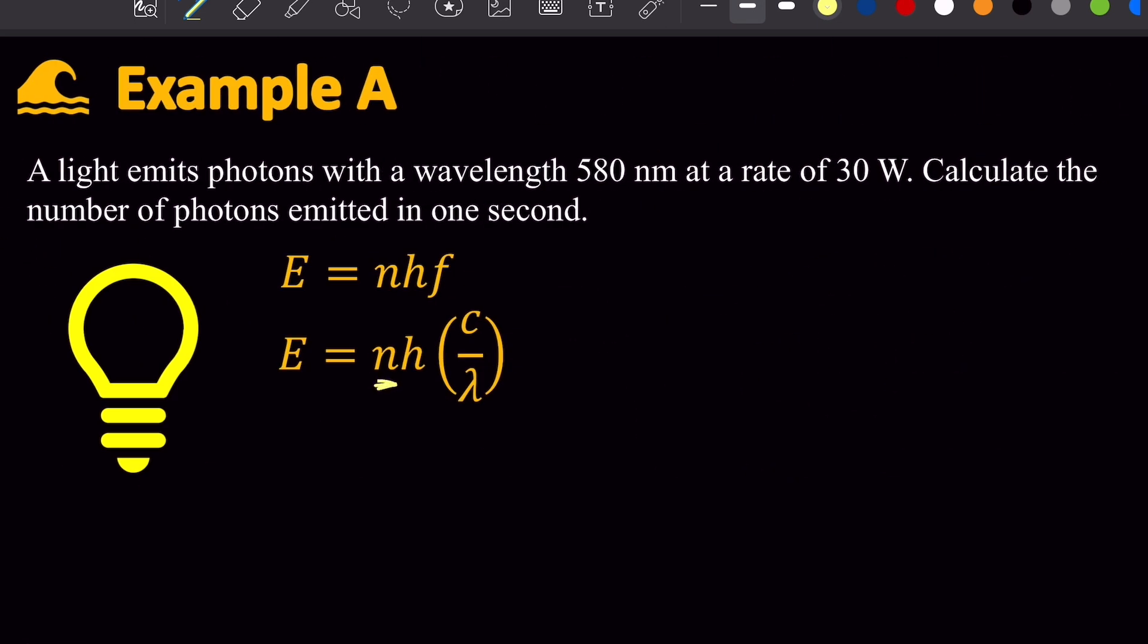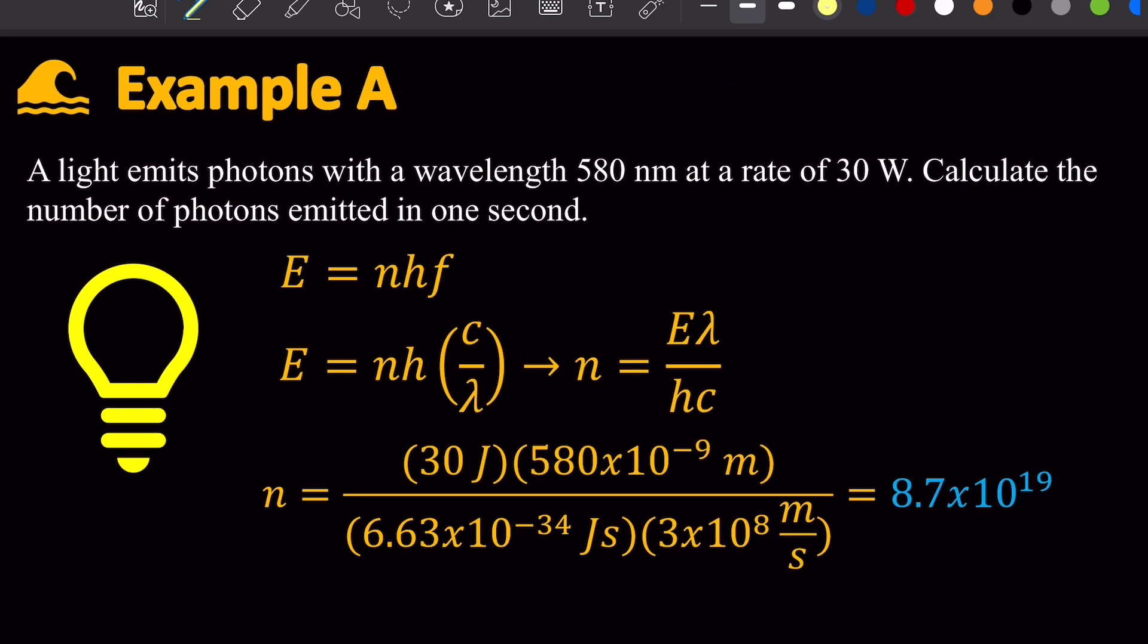Now I'm solving for n, so I'm going to rearrange the equation in terms of n. So I get that n is e lambda over hc. And now to plug in the values. And plugging in the values gets 8.7 times 10 to the 19th photons.